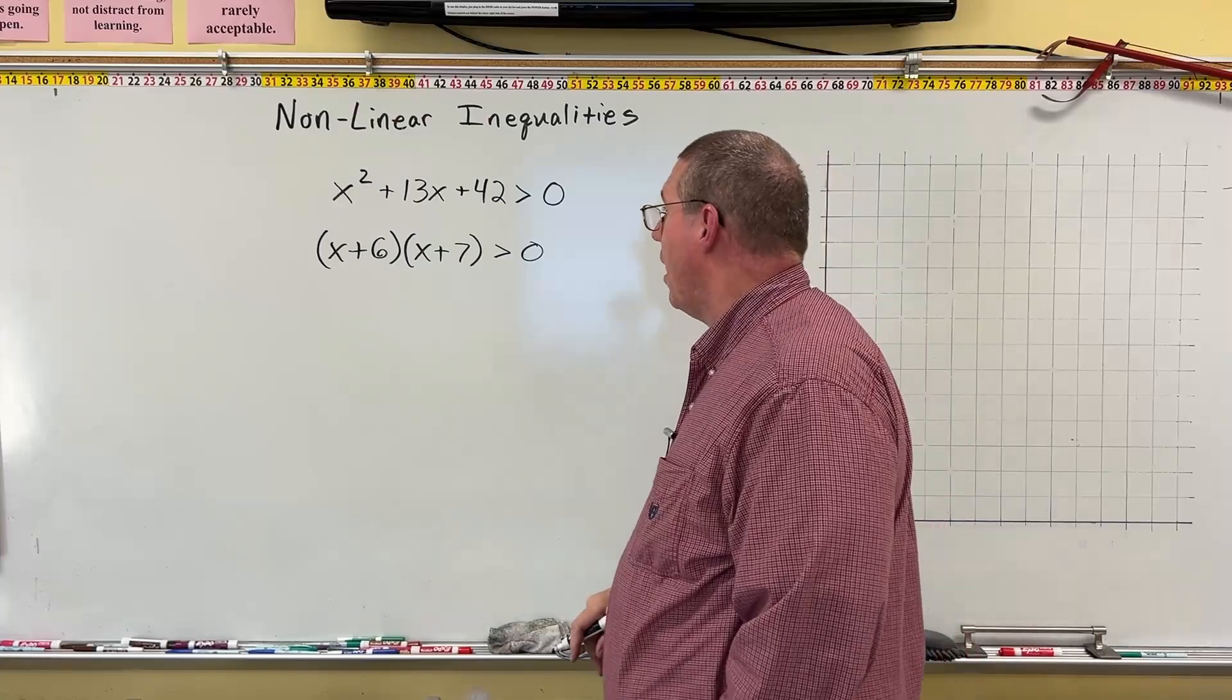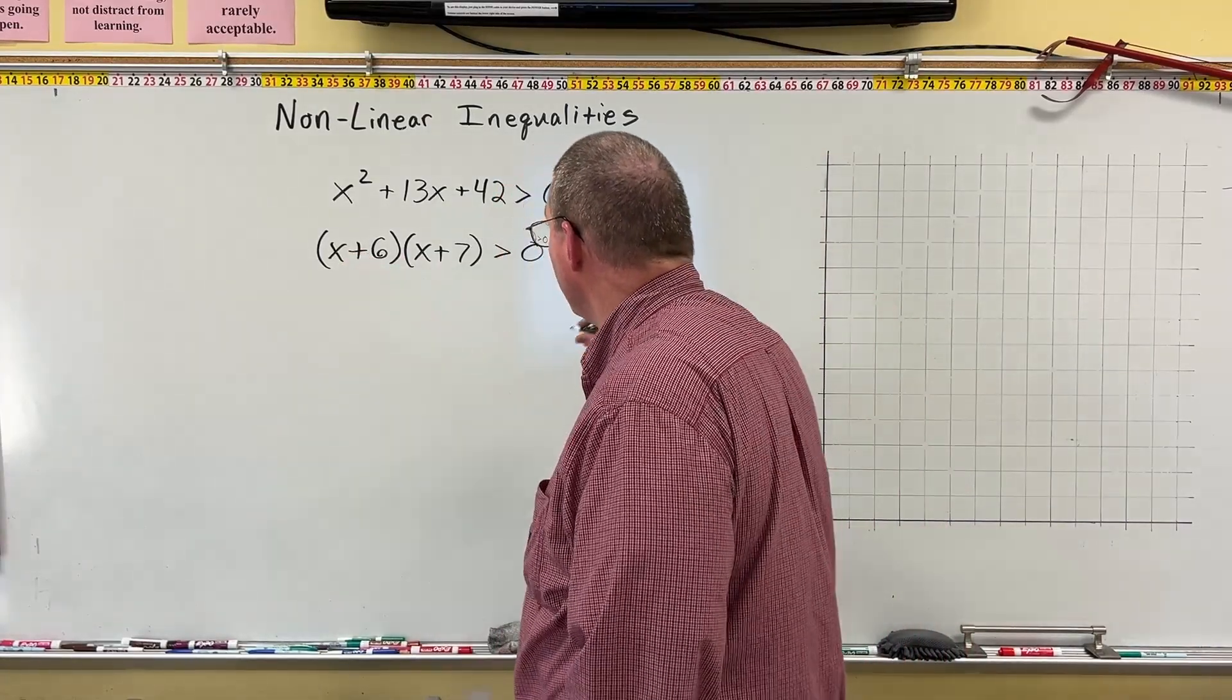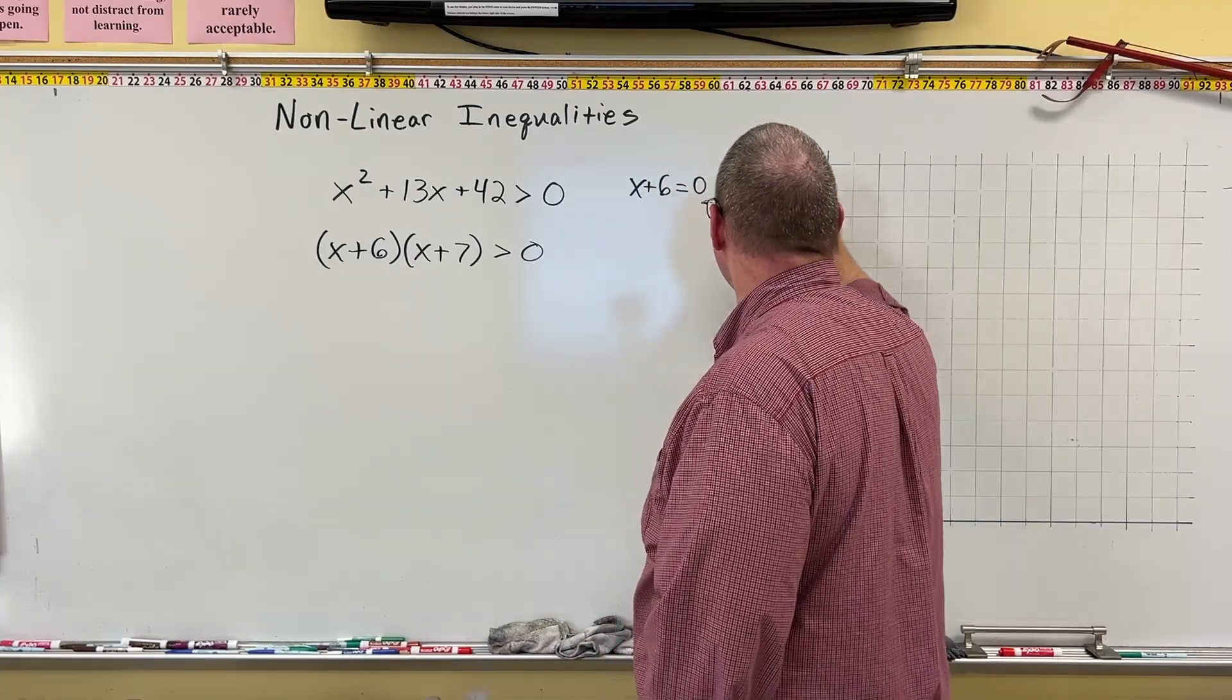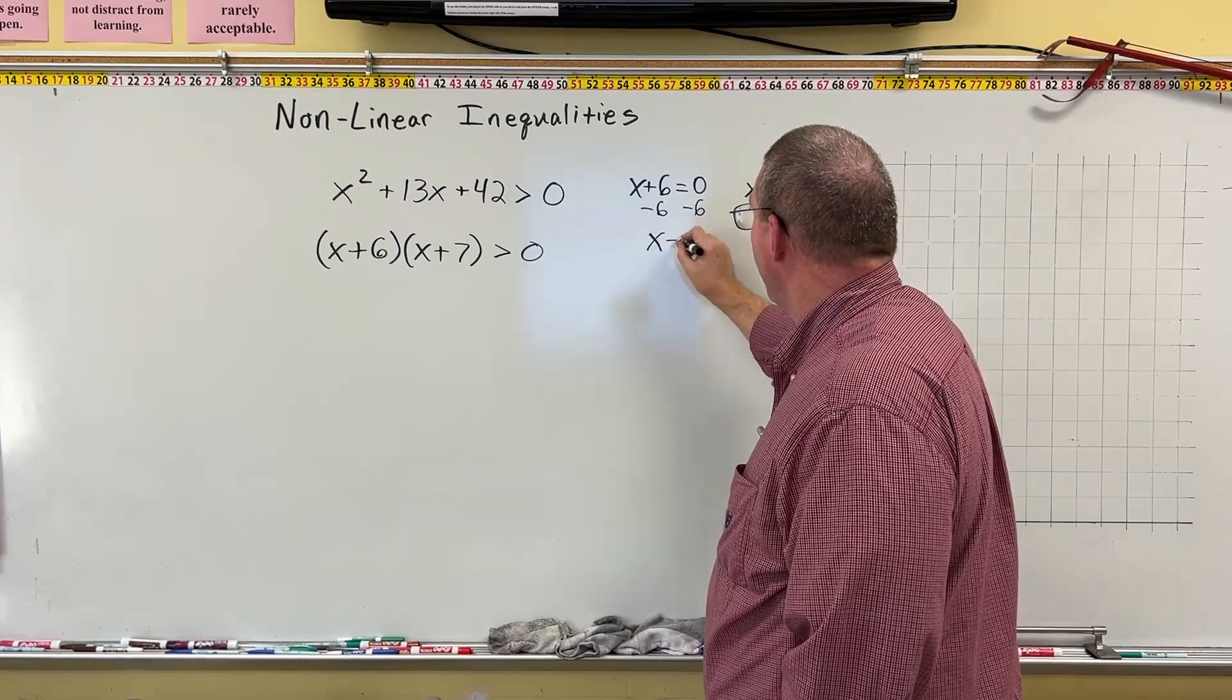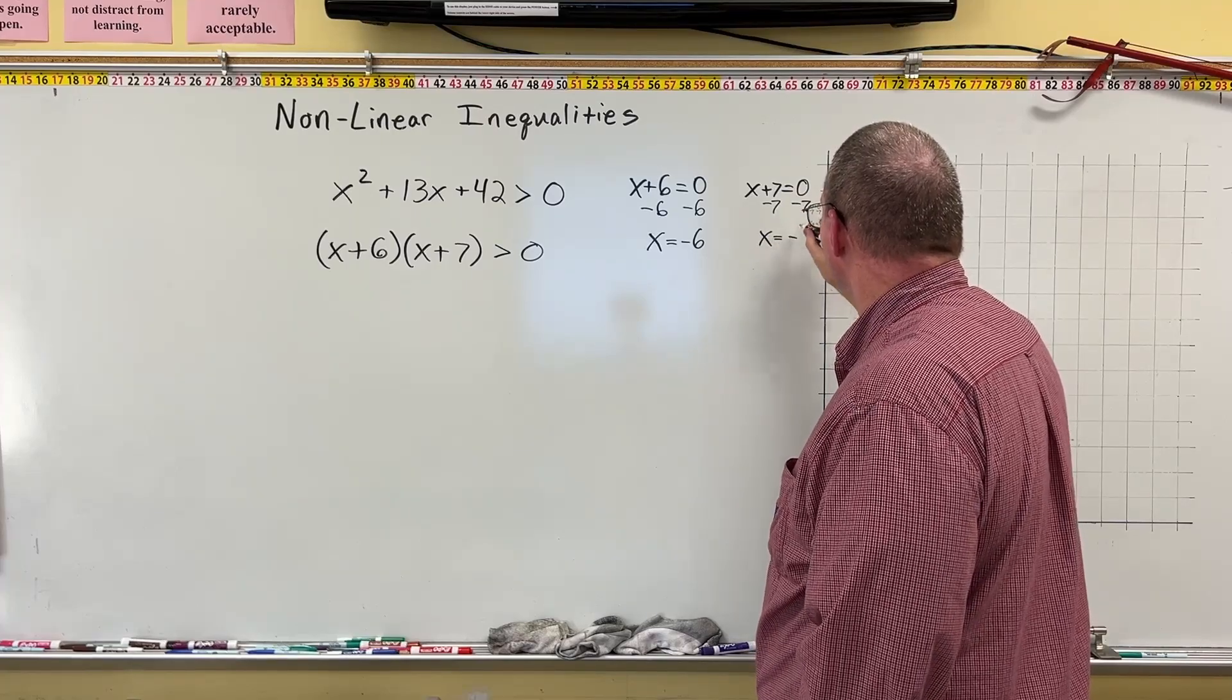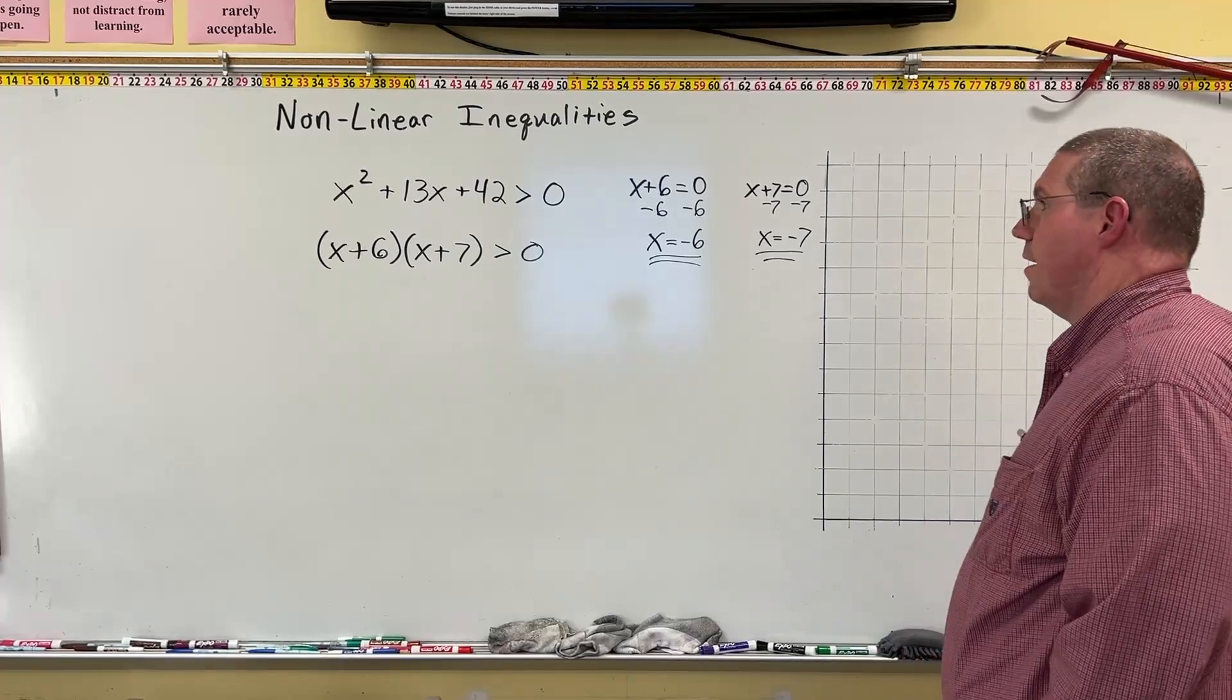Now, how do I identify the solutions here? What I do is I just take each one of these separately and set them equal to zero. I can say x plus 6 equals zero, and I can say x plus 7 equals zero. Here I'm going to subtract 6 from both sides, and I get x is equal to negative 6. Here I'll subtract 7 from both sides, and I get x is equal to negative 7. So my two solutions are negative 6 and negative 7.